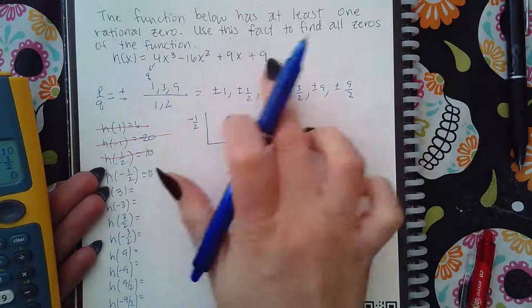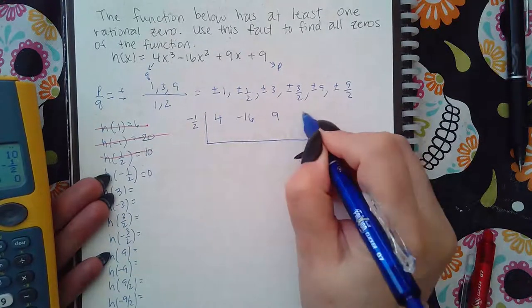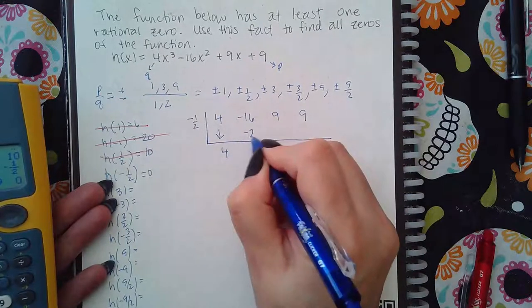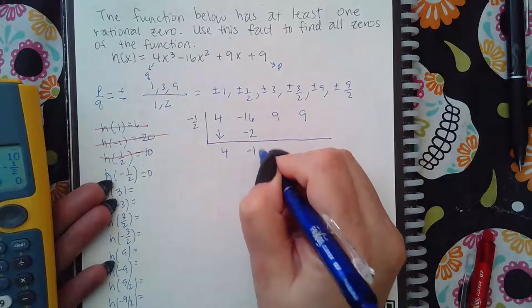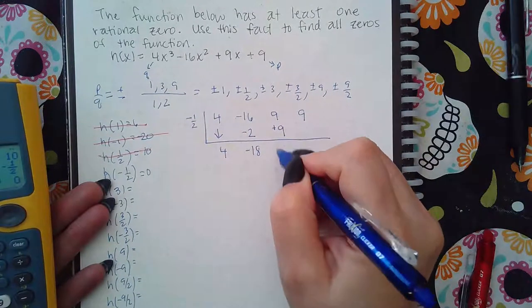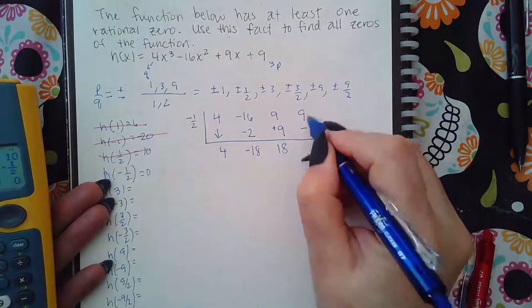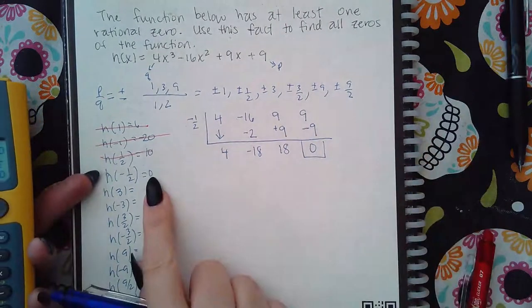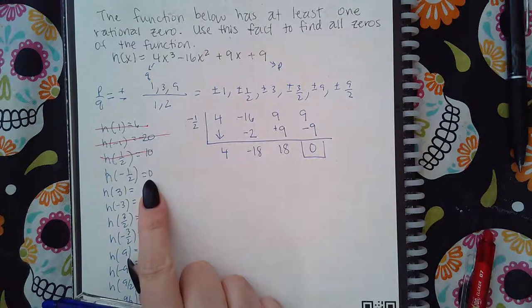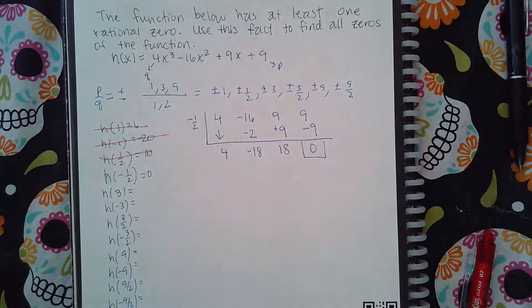So I'm going to put all the coefficients in here in my synthetic division. So I bring down the first one. Negative half of four is negative two. Combine those, negative 18. Negative half of that is going to be a positive nine. I get positive 18. Negative half of that is negative nine. And I get zero. Which I should, right? The remainder theorem says that when I plug in negative one half, that's going to be my remainder. And that was the remainder I got when I did the synthetic division.